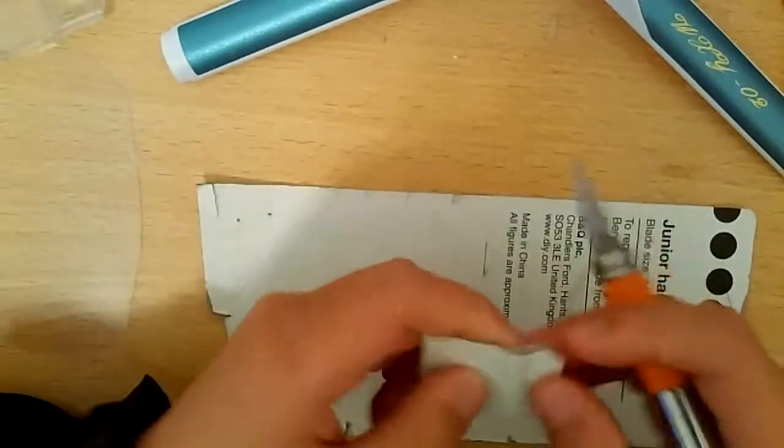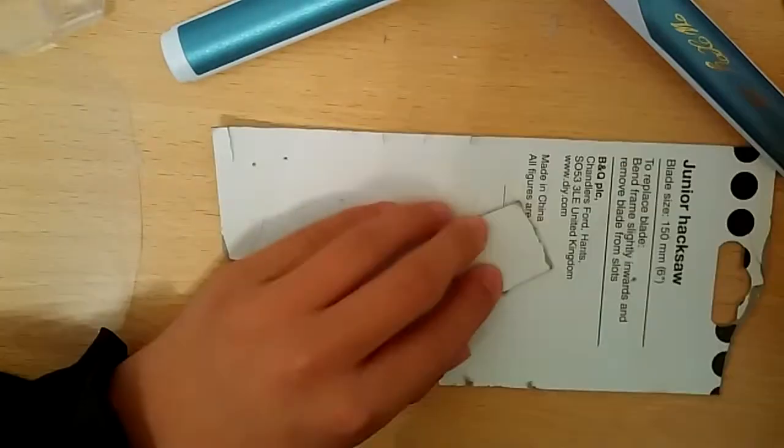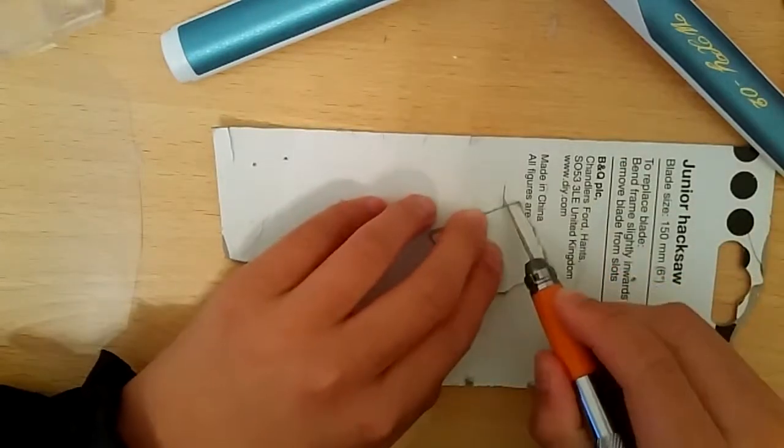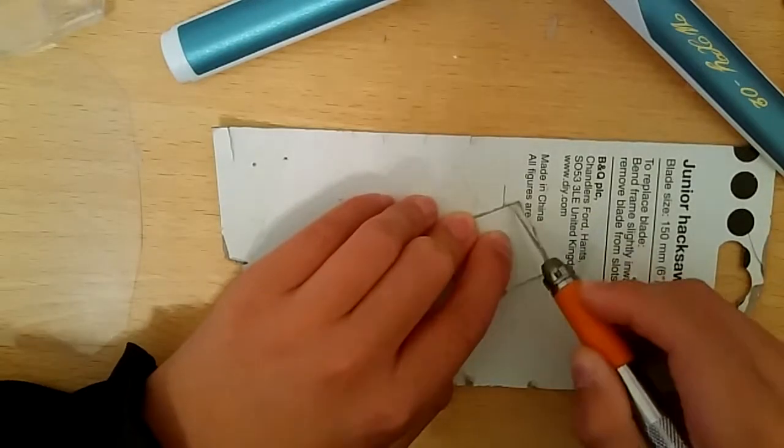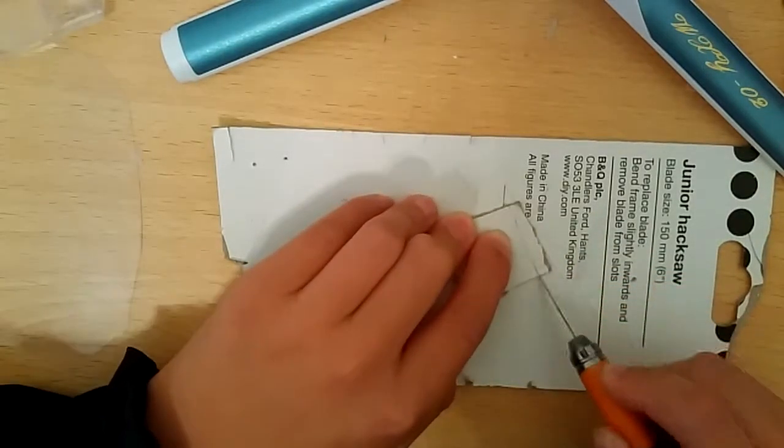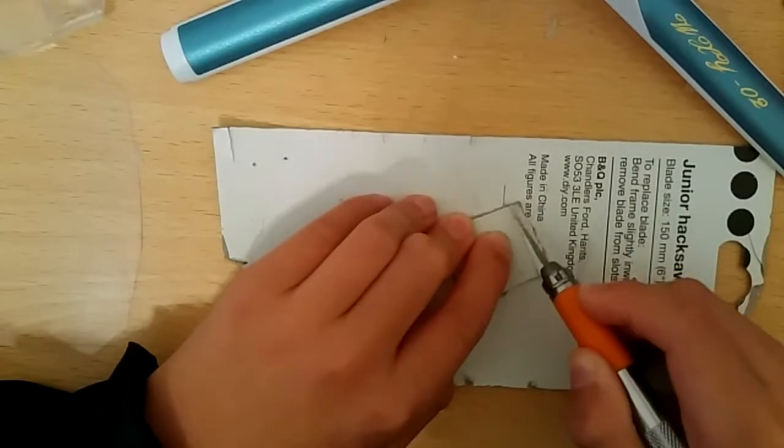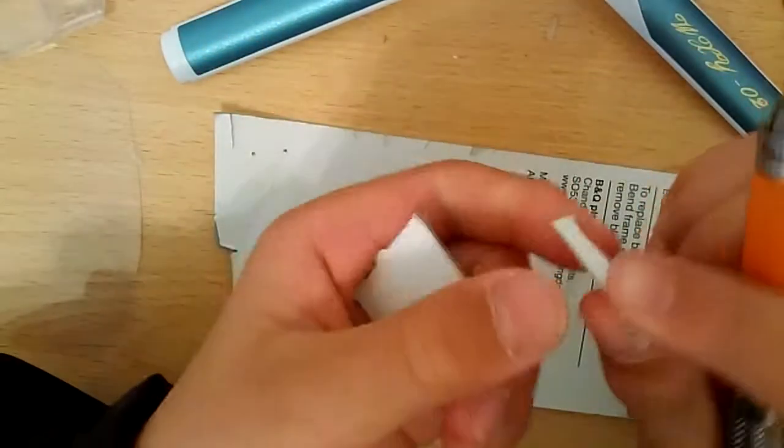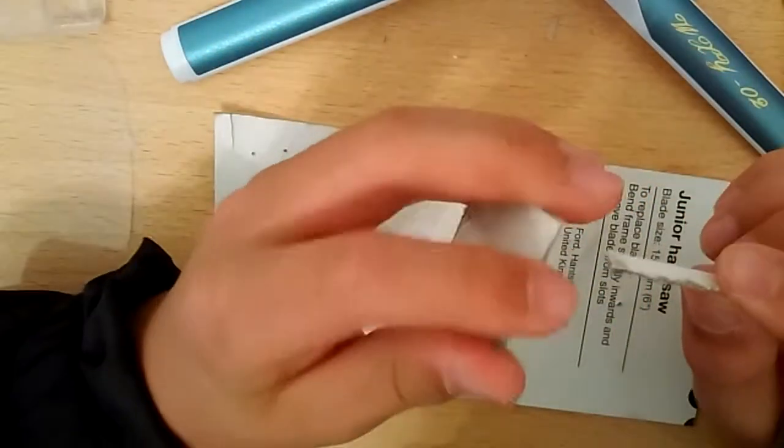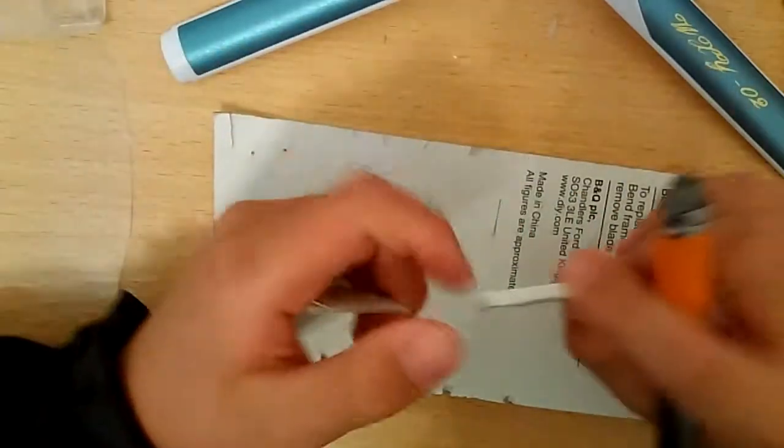You can also draw a line. See how fast it cuts if I draw lines on it. One, two, three, four, five. I think that's it. You only need five presses to cut through thicker cardboard.